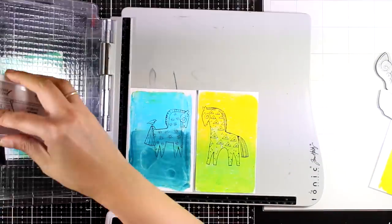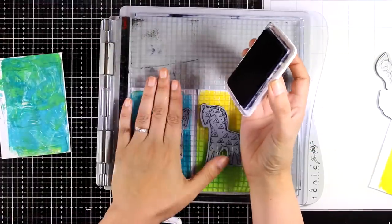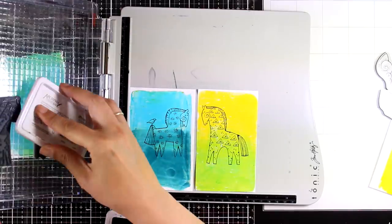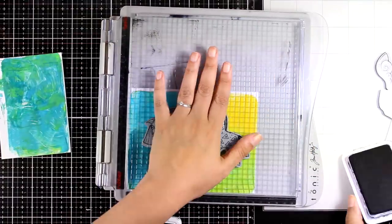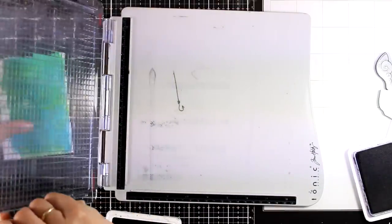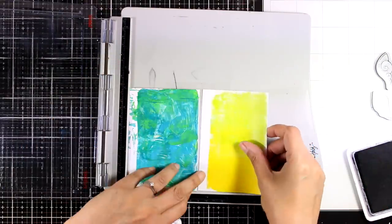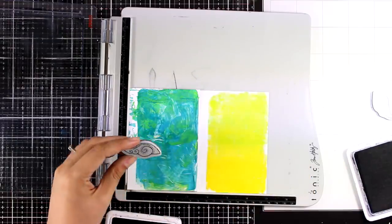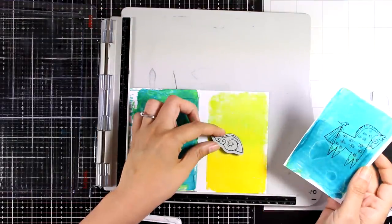I'm going to stamp everything with my black Archival ink. I do have some repositionable tape at the top of my platform so I don't need to use the magnets which makes my life really easy. So I have stamped my images a couple of times just to get a lovely impression and now I will go ahead and use the next two backgrounds to stamp a couple of wings for each of my horses.